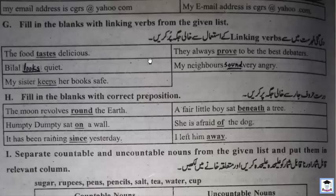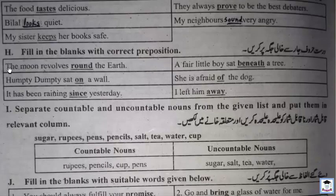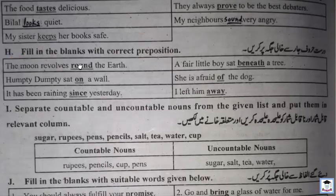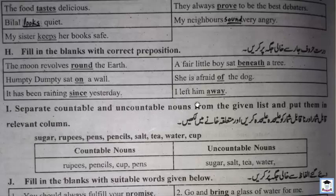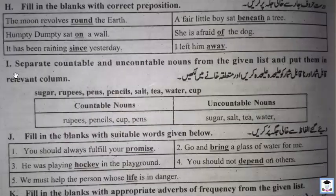Each exercise: Fill in the blanks with the correct preposition. The moon revolves around the earth. A fair little boy sat beneath a tree. Humpty Dumpty sat on a wall. He is afraid of the dog. It has been raining since yesterday. I left him away. The underlined words are prepositions.